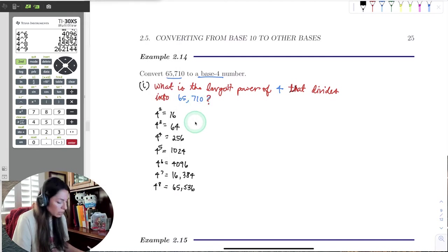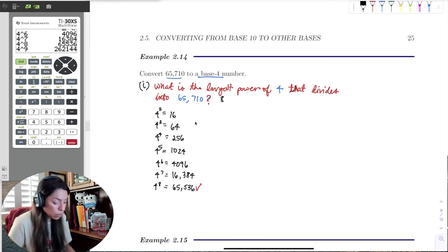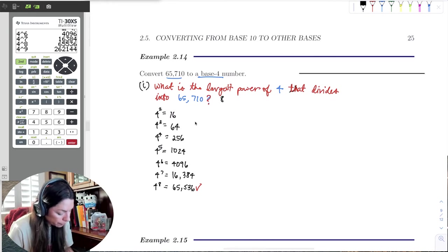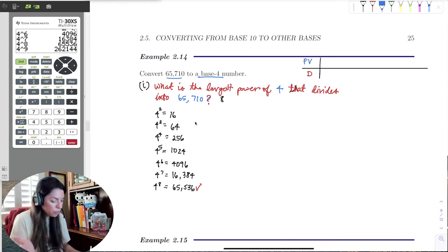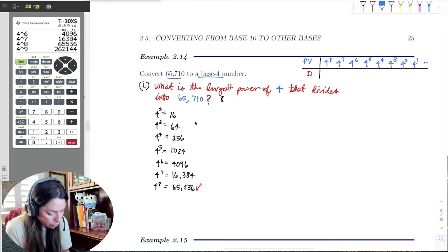So what this means is that the largest power of 4 that divides into 65,710 is going to be 8. So what does this mean? Well, look here at our table. Here is place value. And here is the digits. So we'll start at 4 to the 8th for the place value. And we'll work our way down to the 1's place. So you're going to have 4 to the 8th, 4 to the 7th, 6th, 5th, 4th, cubed, squared, 1, and then the 1's place.